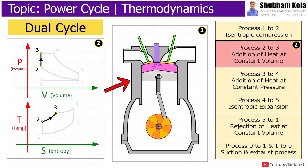The process 2 to 3 is addition of heat at constant volume. During this phase, heat is transferred to air from external source at constant volume. This process is similar to isochoric process in Otto cycle.